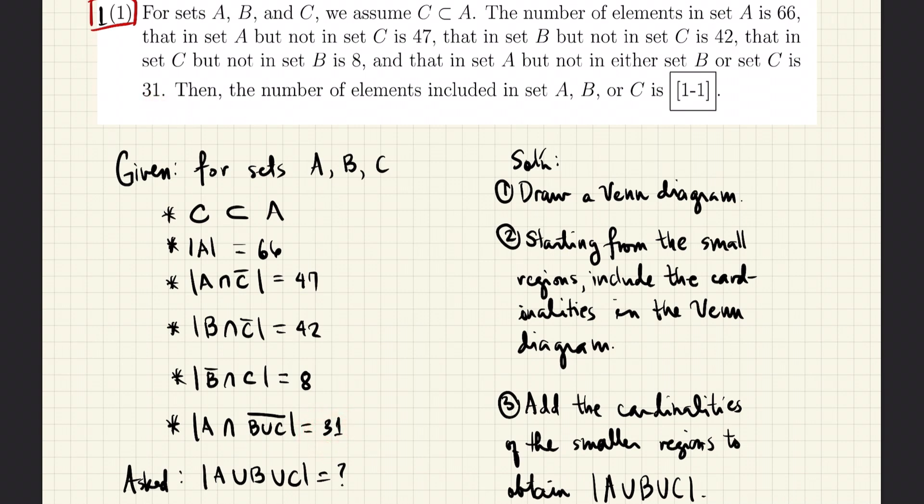Now, we are looking for the union of all three sets. To solve this problem, we first draw a Venn diagram. Then, we populate the segments of the Venn diagram starting from the smallest regions. We put the number of elements in each region. When all the regions are filled, we just add all the number of elements.